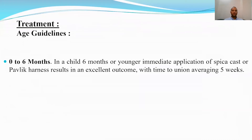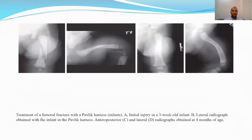For treatment of pediatric femoral shaft fractures, age guidelines are most important. Below the age of 6 months, we can proceed with immediate hip spica casting or Pavlik harness with excellent outcome — average time to union is about 5 weeks. For example, this 3-week-old infant was managed by immediate hip spica casting and achieved good union and good remodeling at 4 months.